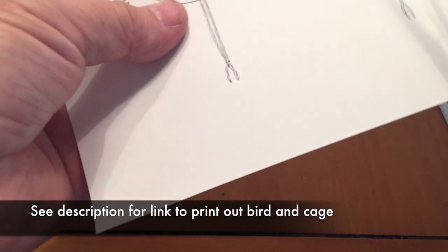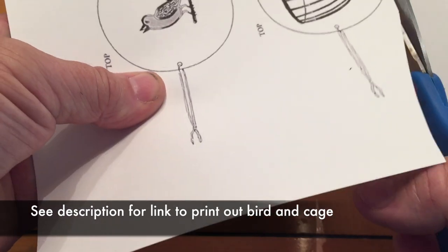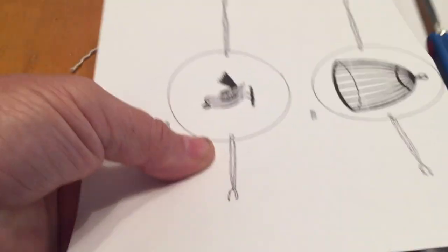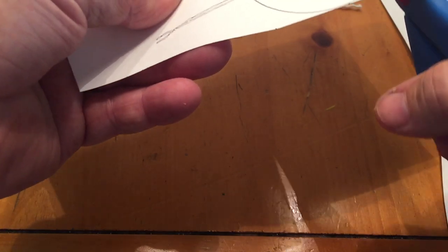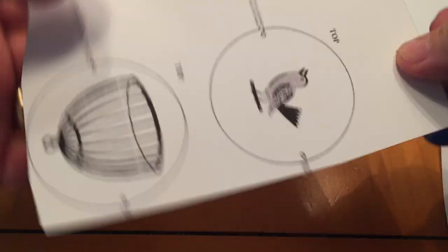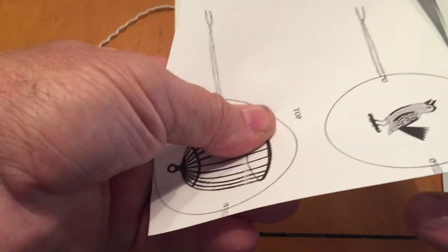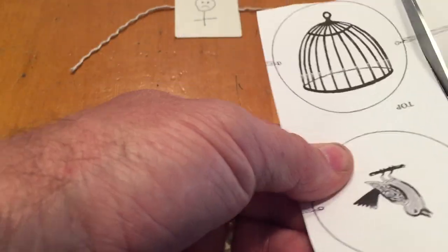So to start off, I have in the description a link to this printout. So you're able to print out the bird cage and the bird, and then you're going to have an adult help you cut out the two circles.